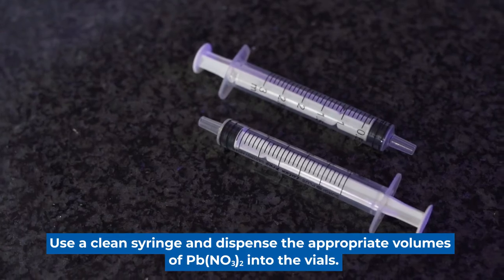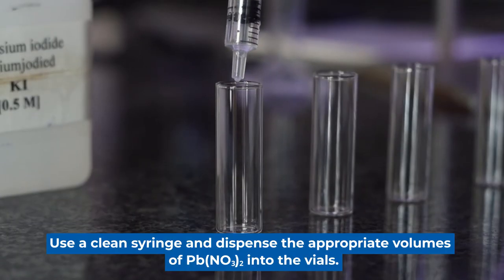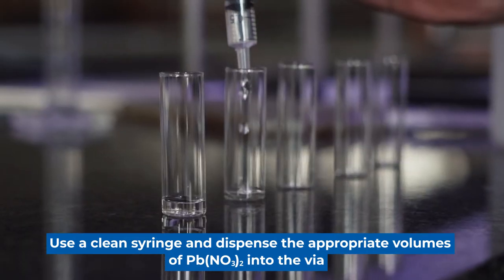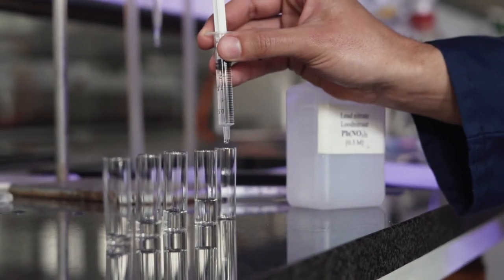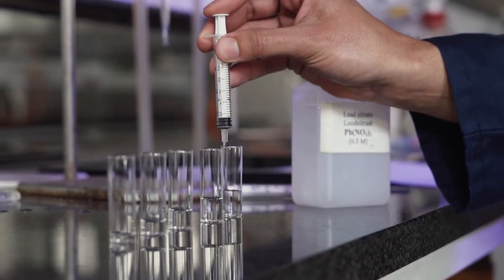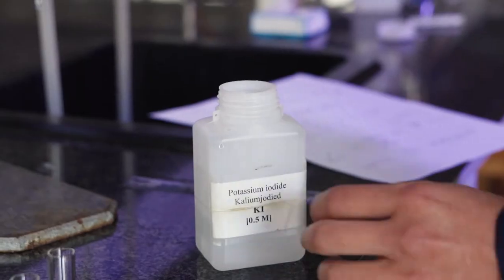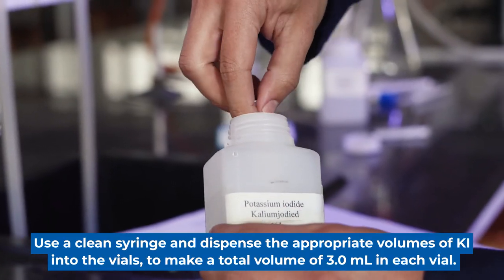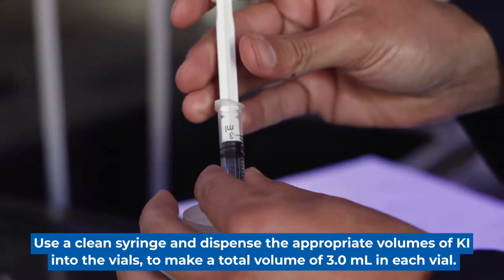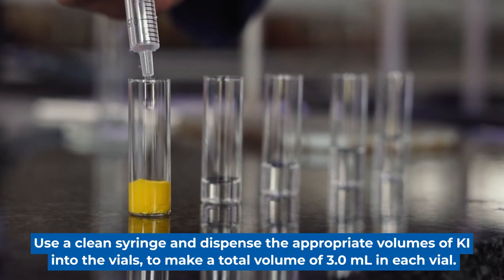Add the appropriate volumes of lead nitrate into the vials using a clean syringe. Using a clean syringe, we will now add the appropriate volumes of potassium iodide to each vial to make up a total volume of three cubic centimeters.